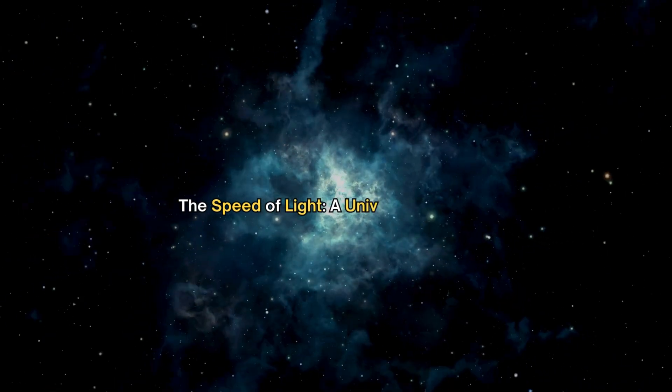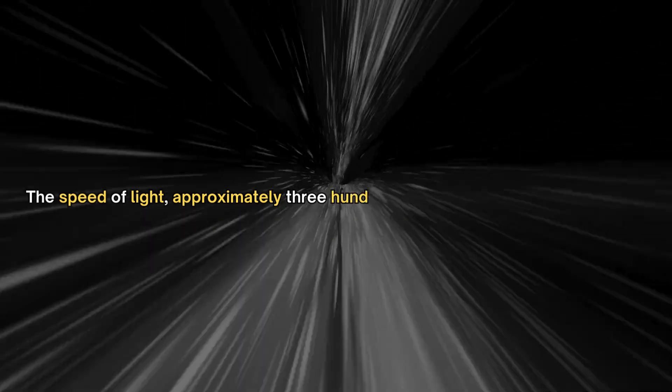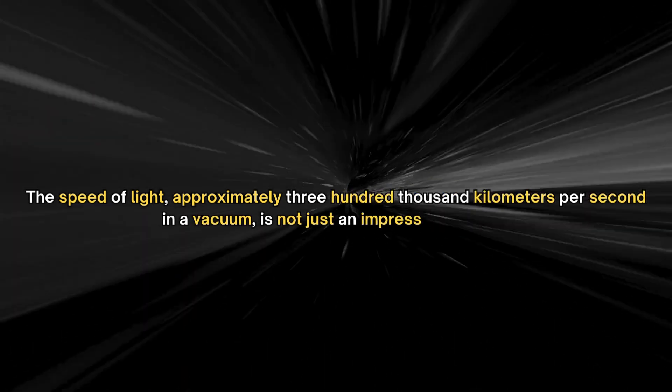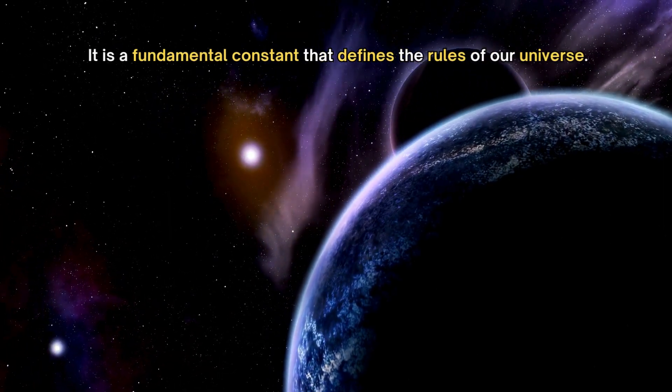The speed of light: a universal constant. The speed of light, approximately 300,000 kilometers per second in a vacuum, is not just an impressive number. It is a fundamental constant that defines the rules of our universe.